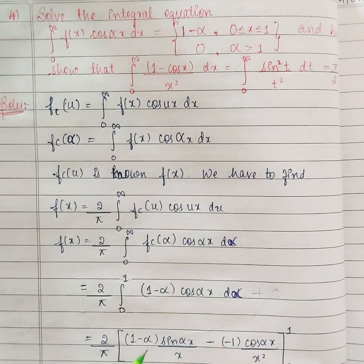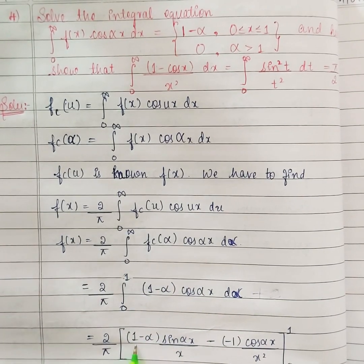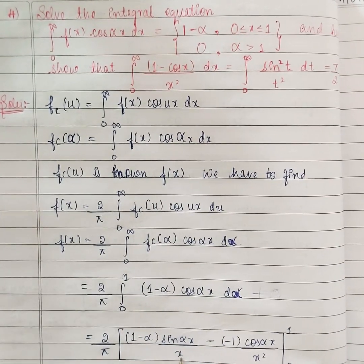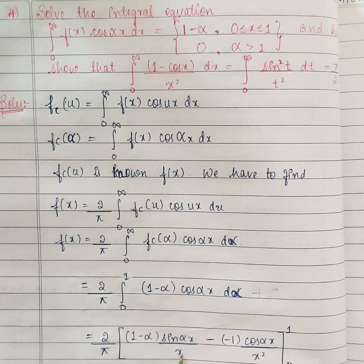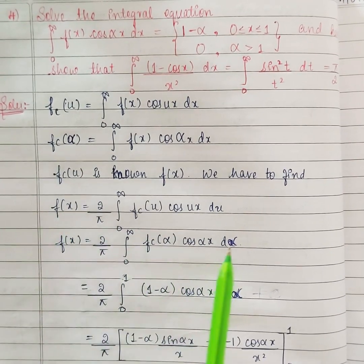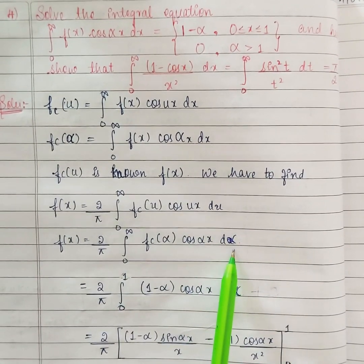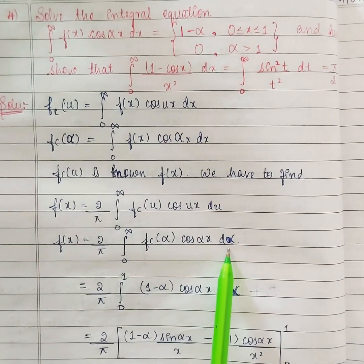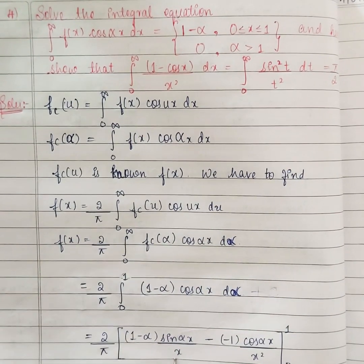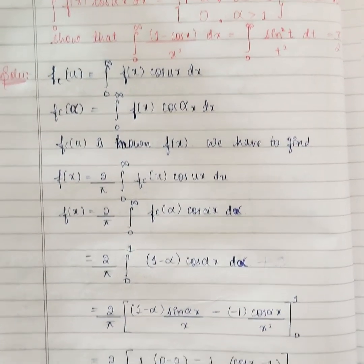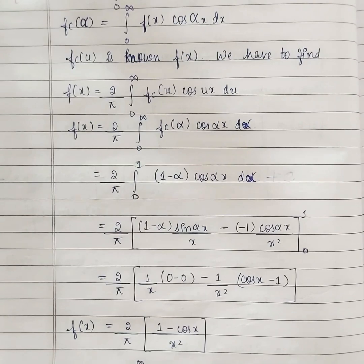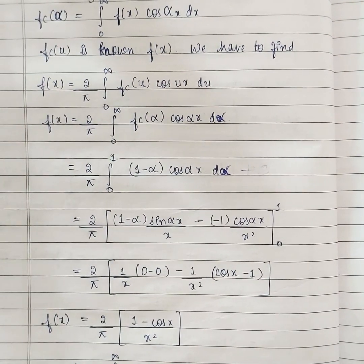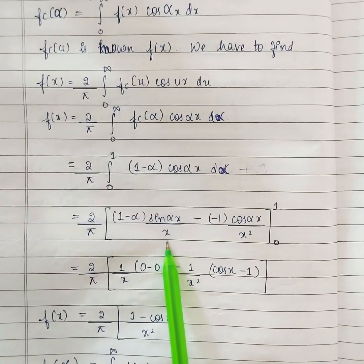Only we have to integrate this using integration by parts. Keep 1 minus alpha as it is; cos alpha x integration is sin alpha x by x. Here we are integrating with respect to alpha, so x is a constant. This is very, very important: in the denominator you are writing x and not alpha. Please write a note for yourself that you are integrating with respect to alpha, so x is a constant. So in the denominator we are writing x here.